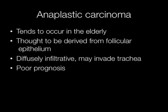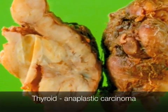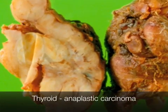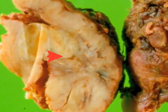Anaplastic carcinomas of the thyroid tend to occur in the elderly. They are thought to be derived from follicular epithelium. They are diffusely infiltrative and may invade the trachea. The prognosis is poor. This diffusely infiltrating, solid, pale tumour is an anaplastic carcinoma.